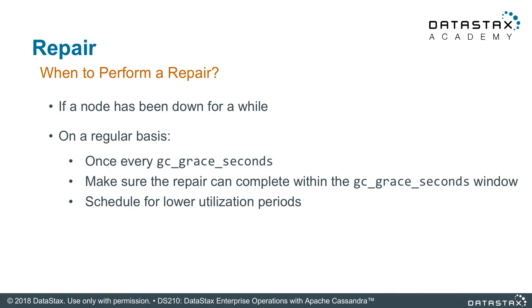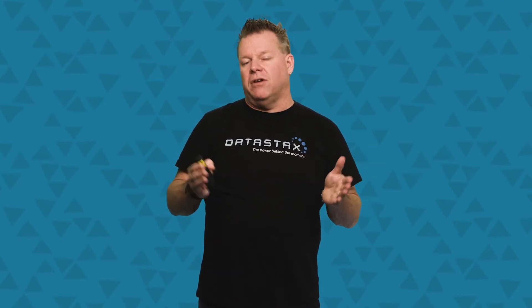When do you run a repair? If you had a node offline for a while, that's a good time — run a repair when you bring it back online, as long as it hasn't exceeded the GC grace period. If the node has been out past GC grace, that node should never go back into the cluster — do a remove node instead. If it's still inside GC grace, run a repair when it comes back. We also recommend running repair on a very regular basis within the GC grace window. If your GC grace is 10 days, repair every single node in your cluster at least once within those 10 days. It's just housekeeping to keep your data consistent.